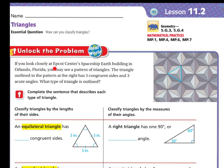Unlocking the problem. If you look closely at the Epcot Center Spaceship Earth Building in Orlando, Florida, you may see a pattern of triangles. The triangle outlined in the pattern at the right has three congruent sides and three acute angles. What type of triangle is outlined?